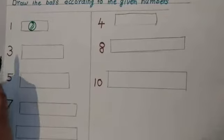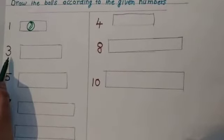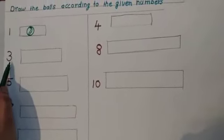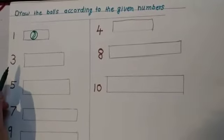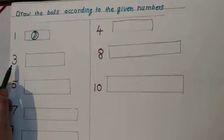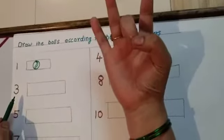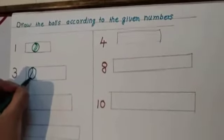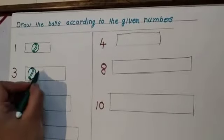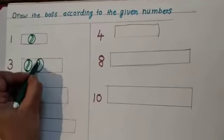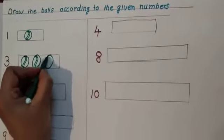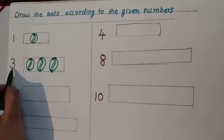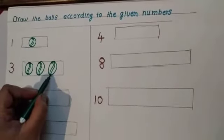Now, look here. Which number is this? Look here, betta. Which number is this? Number 3. So, how many balls do you have to draw here? 3 balls. 1, 2, 3. Dekho kids, yahan pe number 3 hai toh maine three balls draw ki hai.